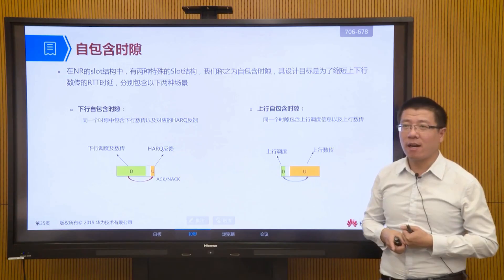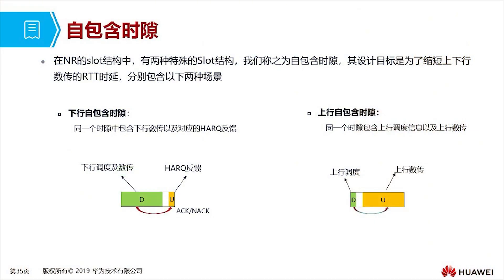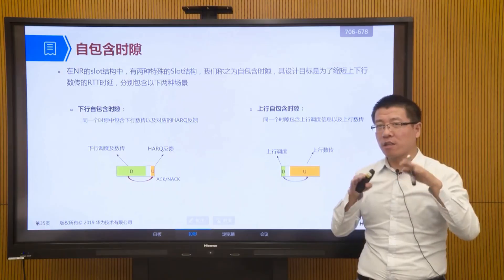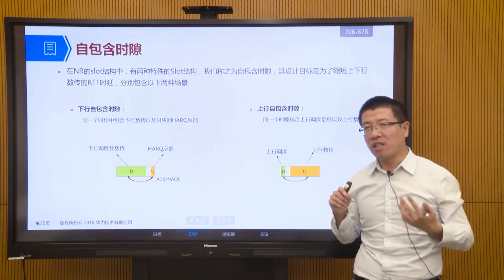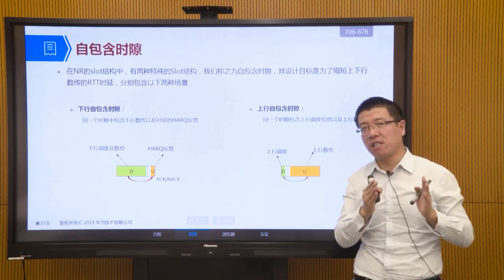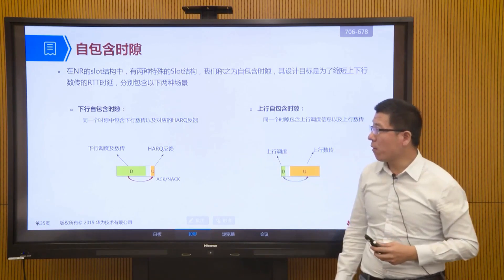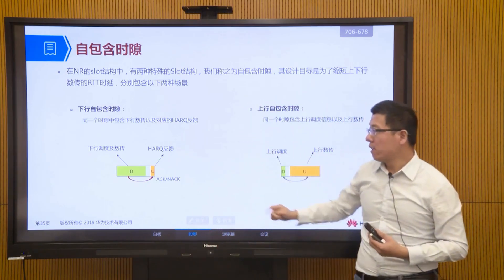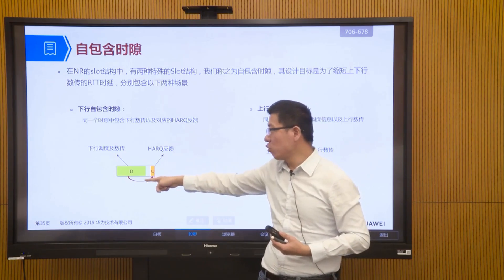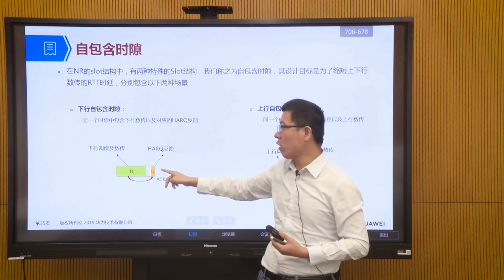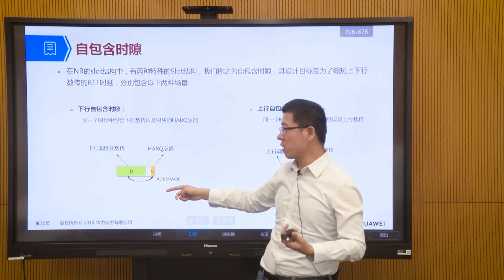In 5G there is also the concept of a self-contained time slot. In TDD systems, uplink and downlink are achieved through different time slots, creating a time lag. With a self-contained time slot, within one single time slot there is downlink, a guard interval, and uplink. This allows the terminal to complete reception of downlink data and provide uplink feedback — ACK or NACK — all within one time slot, effectively reducing latency.